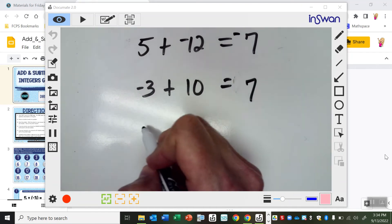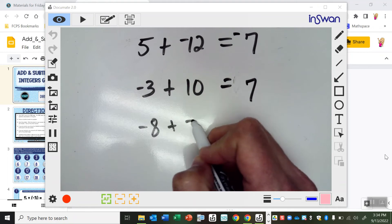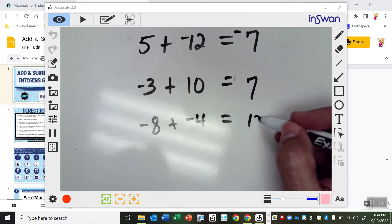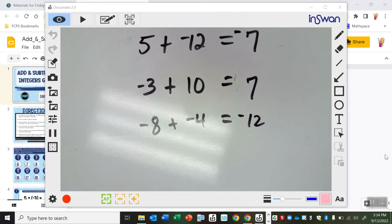All right, so let's try one more. Negative 8 plus negative 4. So again, these are both negative, so they're going to grow together. So 8 and 4 add up to 12, and they were both negative, so it's going to stay negative 12.